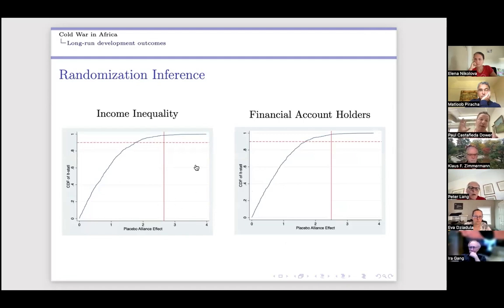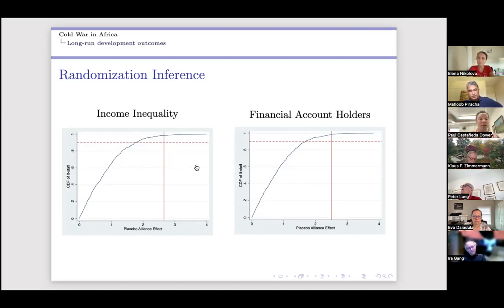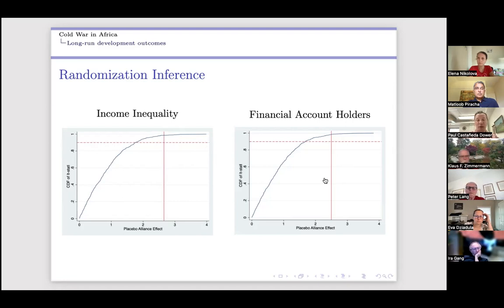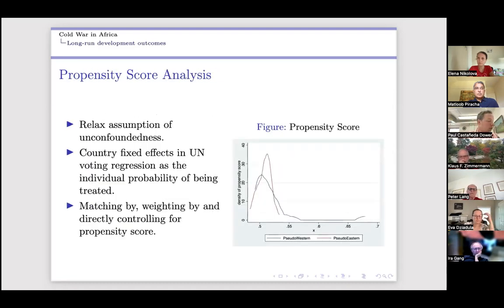To assess statistical significance, we create placebo partitions and do randomization inference: assign countries to Western or Eastern bloc with equal probability, run regressions, calculate the t-statistic, take the absolute value, and plot the distribution. Our estimated t-statistic clearly exceeds the 90th percentile of the placebo distribution, both for income inequality and financial account holders. We can also run this as a joint hypothesis and get similar results.